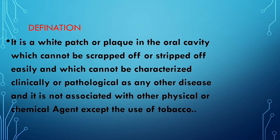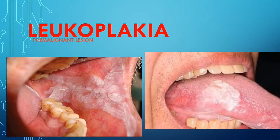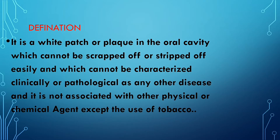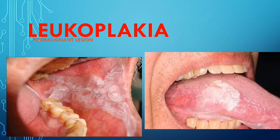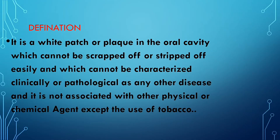So this is the proper definition of leukoplakia. It is the white patch or plaque in the oral cavity — as you can see in the picture, there is a white patch or plaque in the oral cavity. This white patch or plaque cannot be scraped off or stripped off easily; if you try to remove it by scraping, it cannot be removed normally.